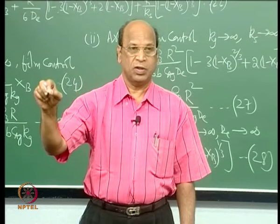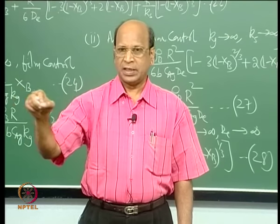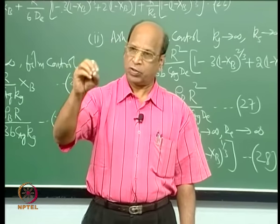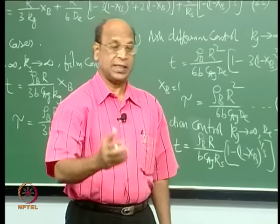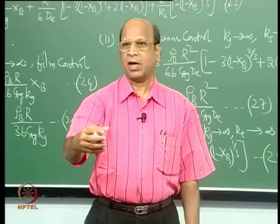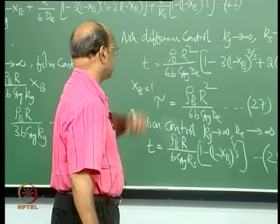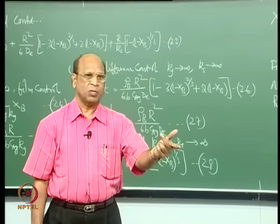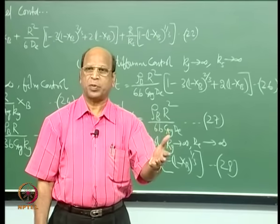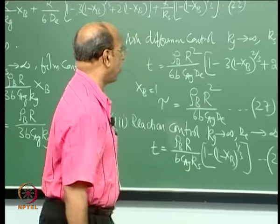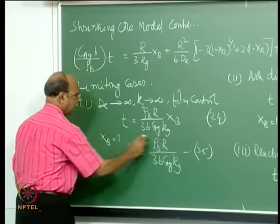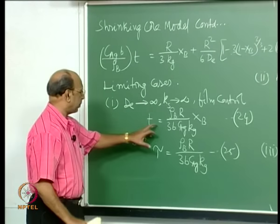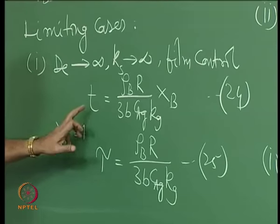For example, calcium carbonate going to CaO plus CO₂: if you take 10 grams of a particle, CO₂ will escape and there will be a change in weight. This weight change can be converted to X_B — the conversion — since you know the initial moles and at any time the weight gives current moles. So you can plot X_B versus time t.